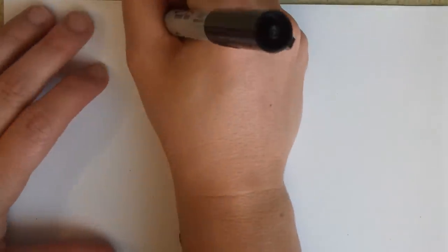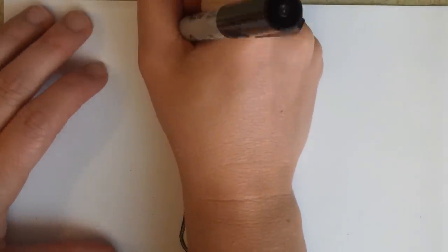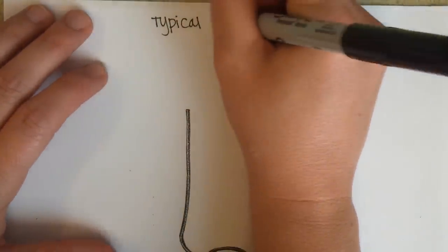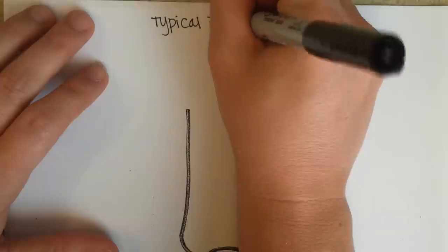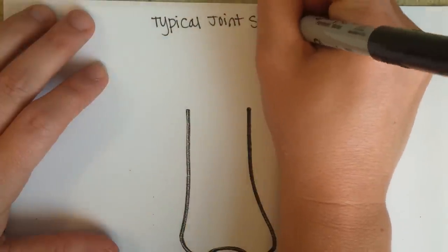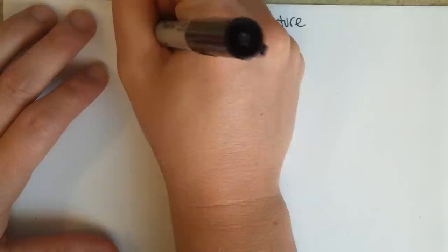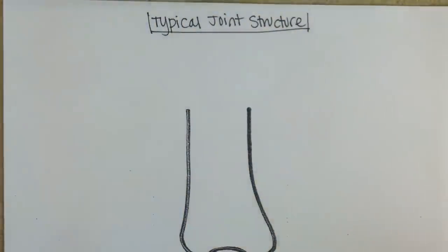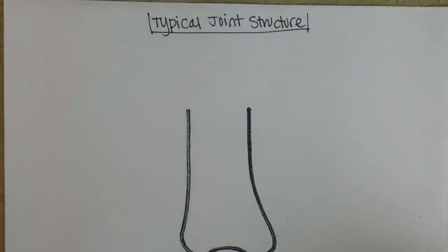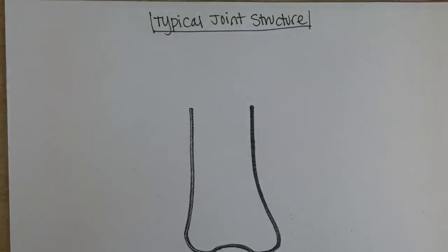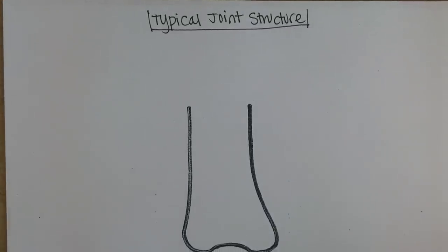Typical joint structure. For our foray into a typical joint structure, I am going to look at the knee roughly, and we can sort of apply these same principles to other joints, although the knee certainly has a lot of uniqueness to it too. So I'm going to start on the inside and kind of move outward.